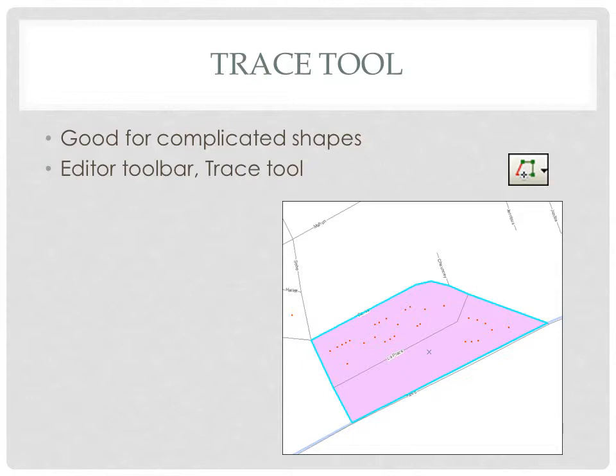Another very useful tool is the trace tool. The trace tool allows you to run your mouse along another line from another feature class, tracing the formation of that line and integrating it into the data you're creating. That's very useful for working in areas where you might have rivers, coastal features, or complicated political boundaries that are complex in terms of shape.